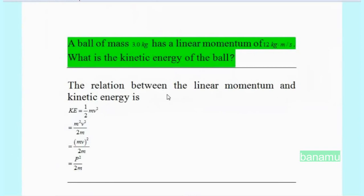The relation between the linear momentum and kinetic energy is KE equals half mv squared. Multiply and divide the mass m from the above equation.